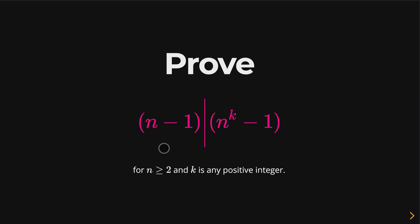In today's video, we are going to be proving this, that n minus 1 always divides n to the k minus 1 whenever n is greater than or equal to 2 and k is any positive integer.